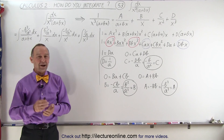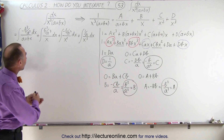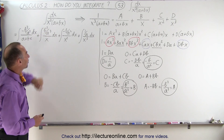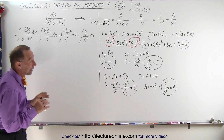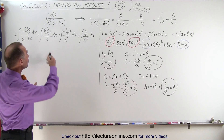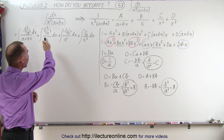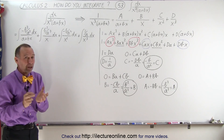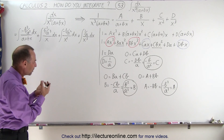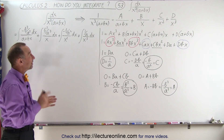Welcome to our lecture online. Our next example involves the integral dx over x cubed times the quantity a plus bx. You don't want to solve this by substituting u for a plus bx and then substituting for x and dx, because you end up with a polynomial to the fourth power in the denominator, which would be very difficult to deal with. So you don't want to mess with that.